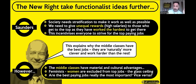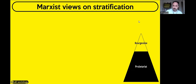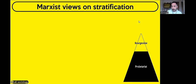Now let's look at the Marxist view of stratification. As mentioned, Marxists stratify society according to a class-based system. Marx makes it simple — just two social classes: the bourgeoisie who own stuff and have power, and the proletariat who don't own stuff and don't have power. What the proletariat have to do is work for the bourgeoisie in order to survive.